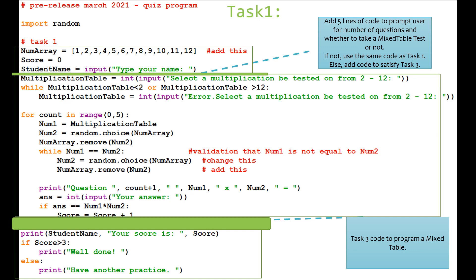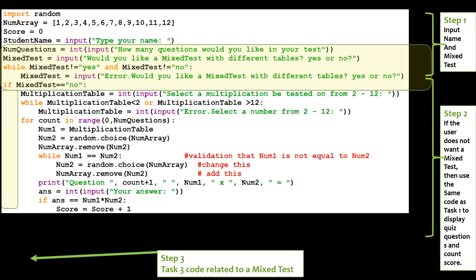So after we finish the normal code from task 1 about a normal test, then we're going to add the task 3 code to make a mixed table program. So if they said no, we don't want a mixed table program, we have the old code from task 1, and then in that bigger green section, we're going to add the new task 3 code. So let's have a look at task 3.